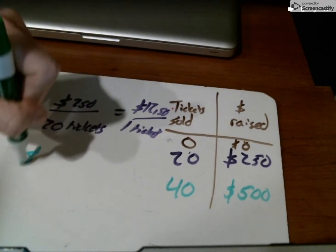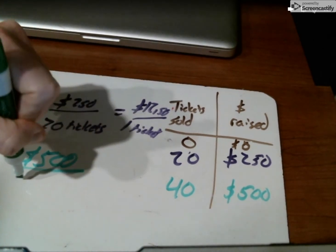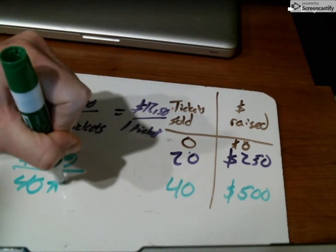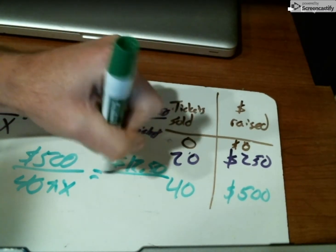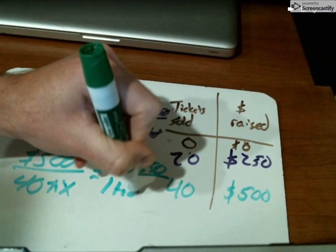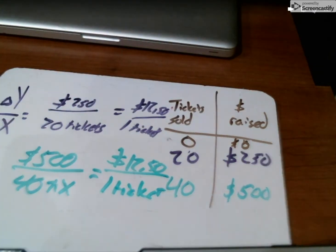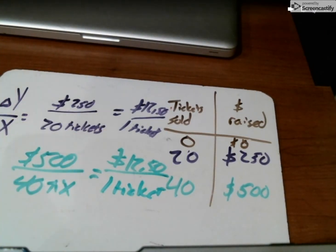If we tried using the other data point, this is a proportional relationship, as many of you noticed. That means any data point that we pick is always giving us the same slope, the same unit ratio: twelve dollars and fifty cents for every one ticket.